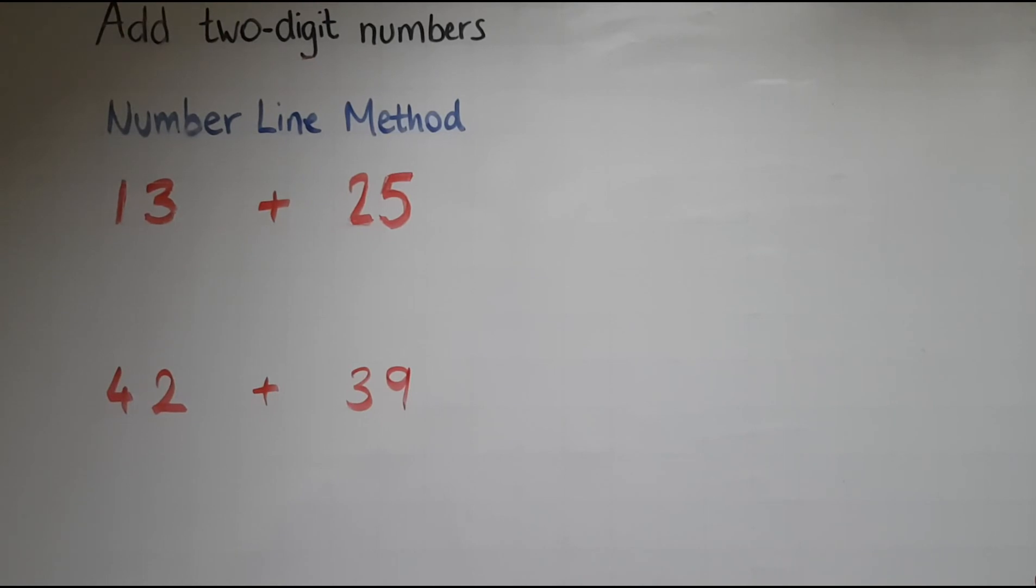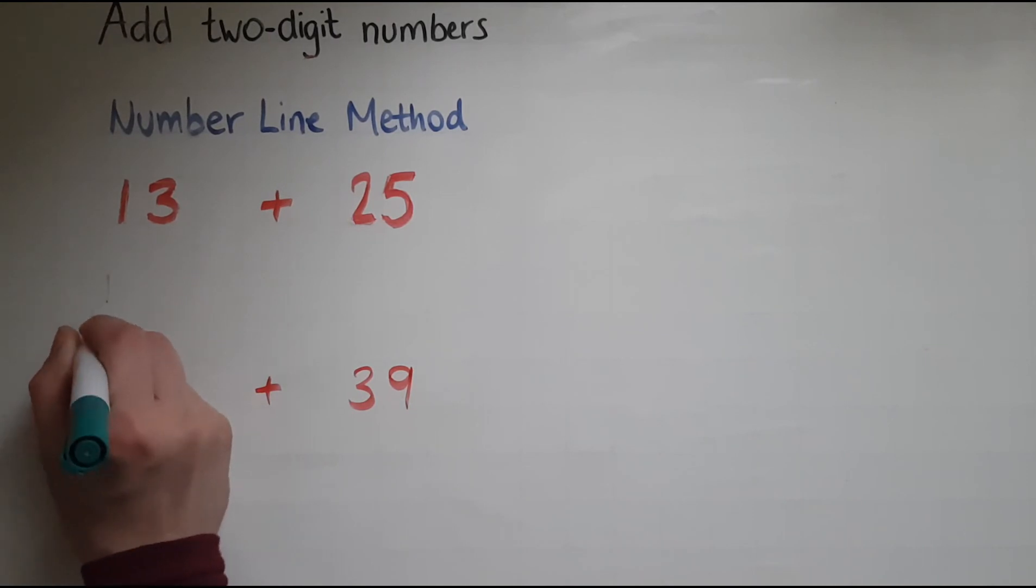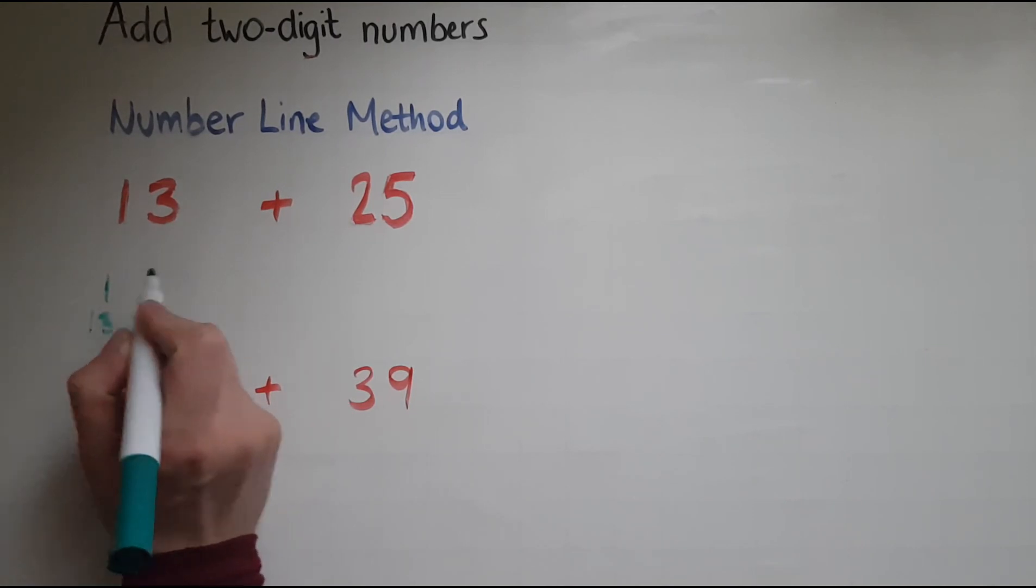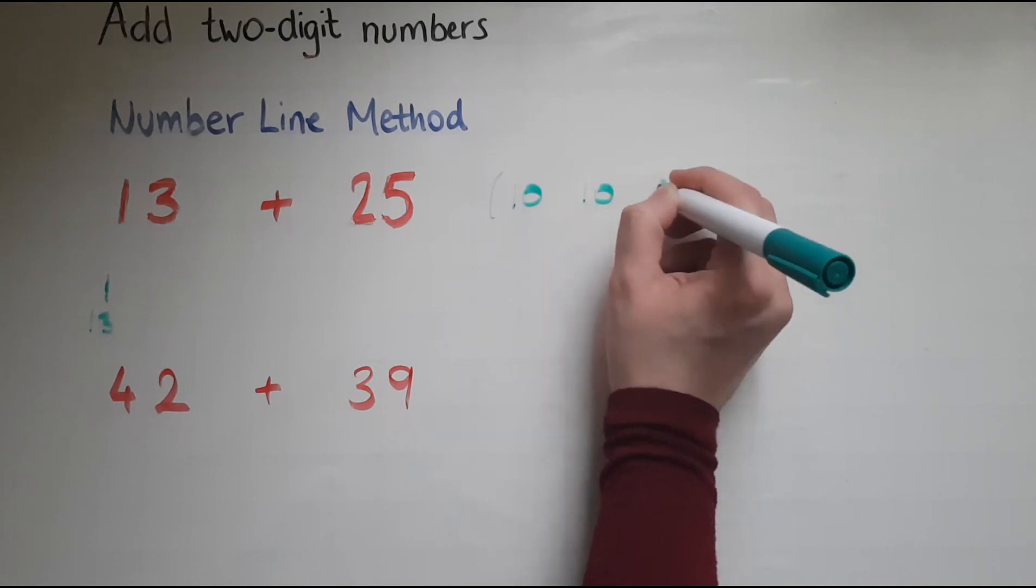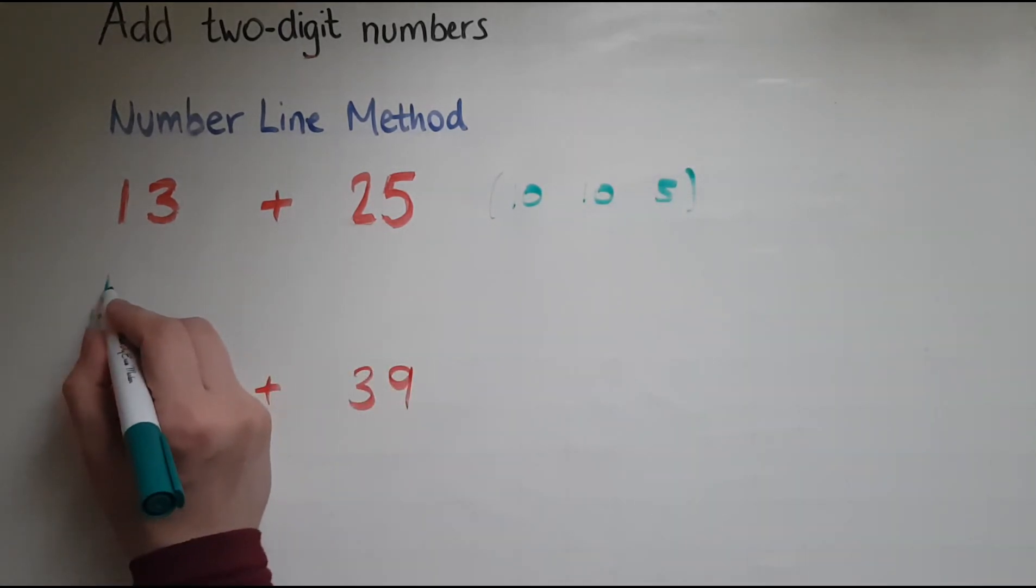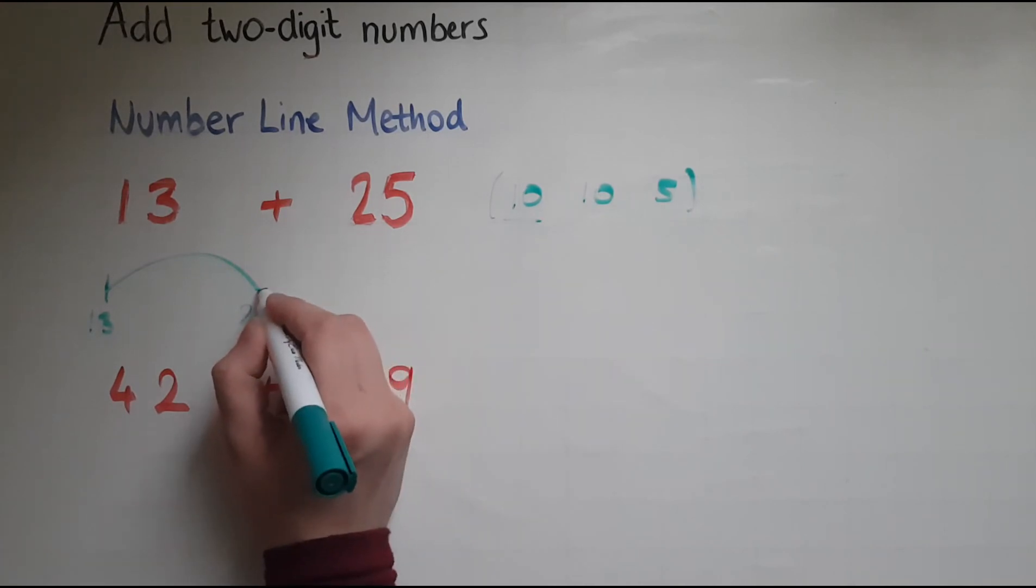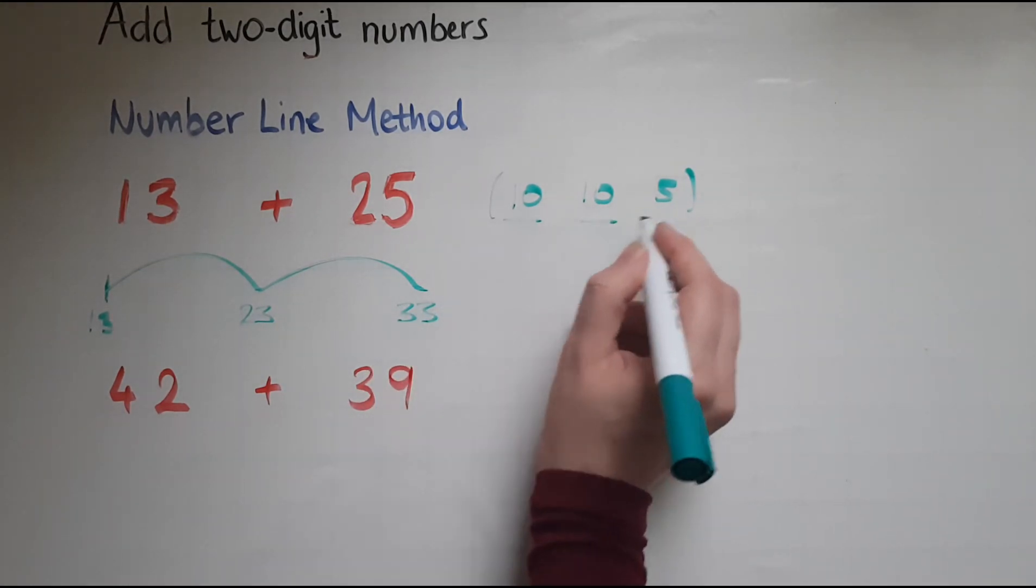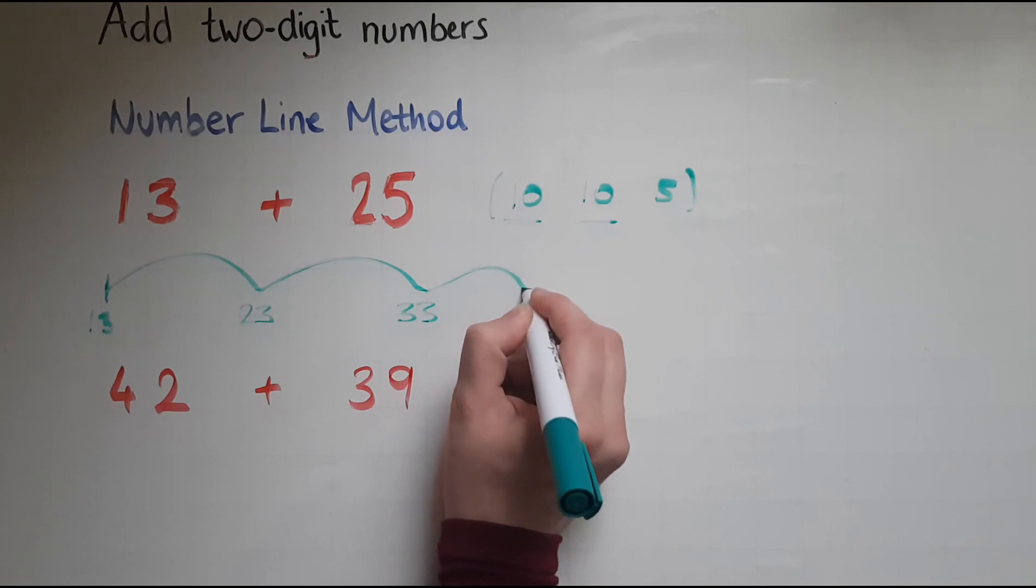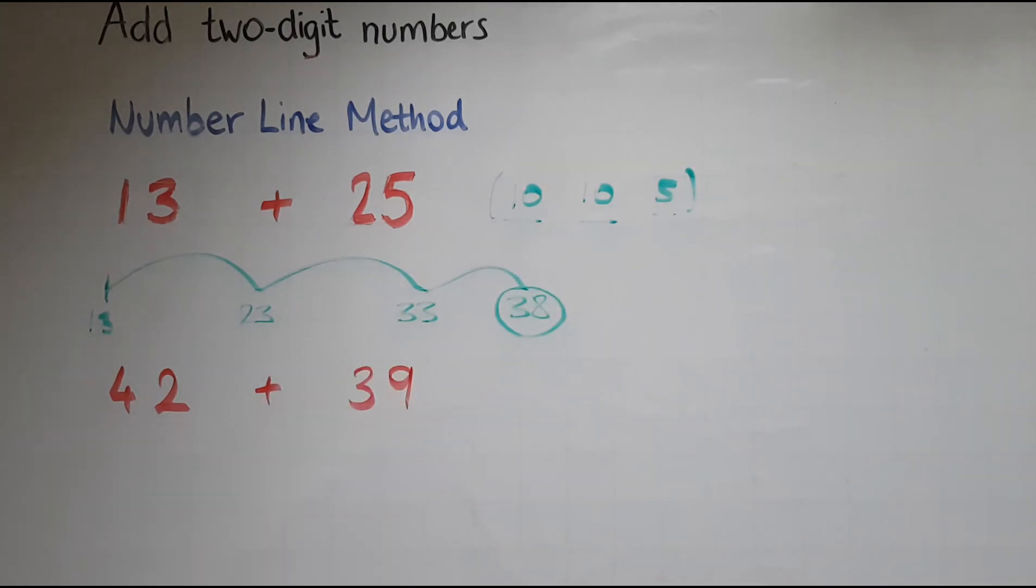In this video we'll learn to add 2-digit numbers using the number line method. I've got 13 and 25, I'm going to add them together. So what I'm starting with is the number 13. What I'll do is I'll break the 25 down in my head into 10 and 10 and 5. So I've got 13. If I add 10 that makes 23. If I add another 10 that makes 33. If I add 5 now that is going to be 38. So I've added all of them and my answer is 38.